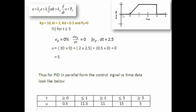For time greater than 3, the error is 0, so the derivative is also 0. The integration beyond t = 3 uses the same previously calculated area of 2.5. Substituting into the equation gives u = 5. To summarize the PID parallel form results for all five conditions: u = 0.5, 11.5, 11, 15, and 5 respectively.